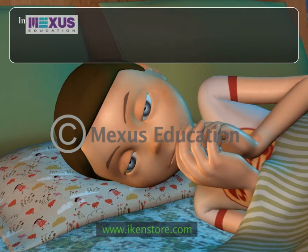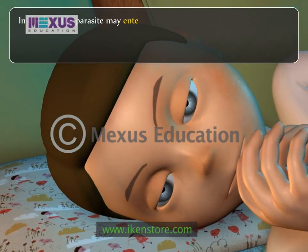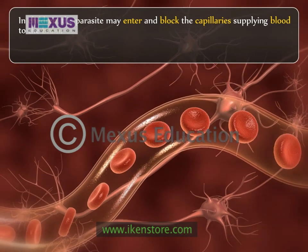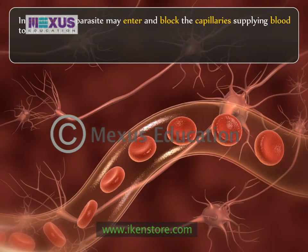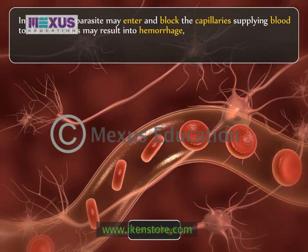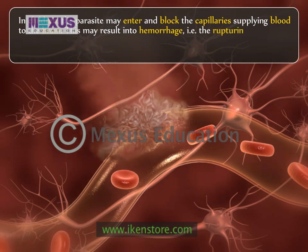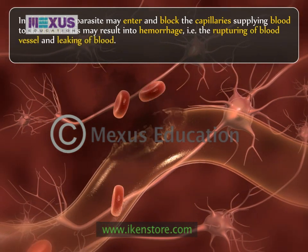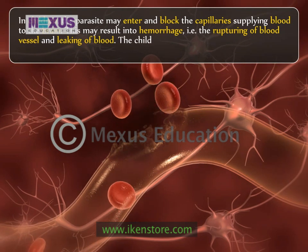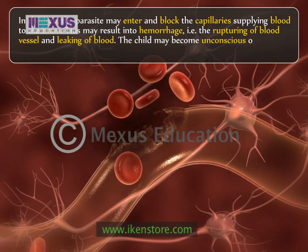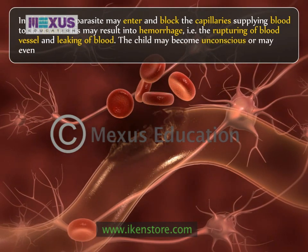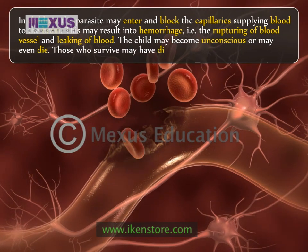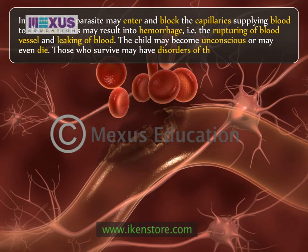In children, the parasite may enter and block the capillaries supplying blood to the brain. This may result in hemorrhage, that is the rupturing of blood vessels and leaking of blood. The child may become unconscious or may even die. Those who survive may have disorders of the nervous system.